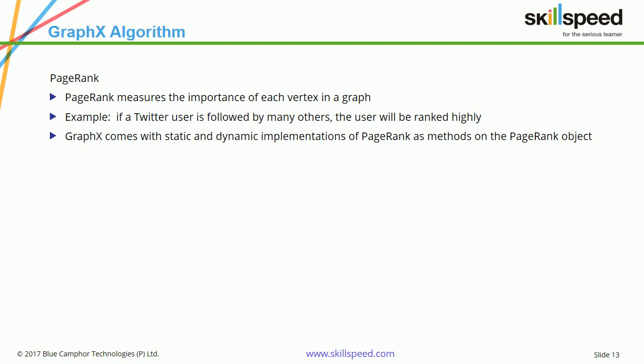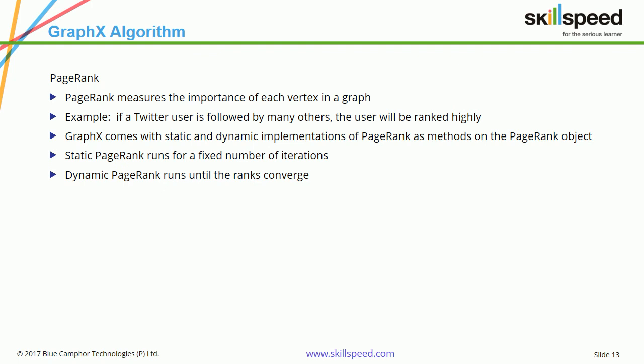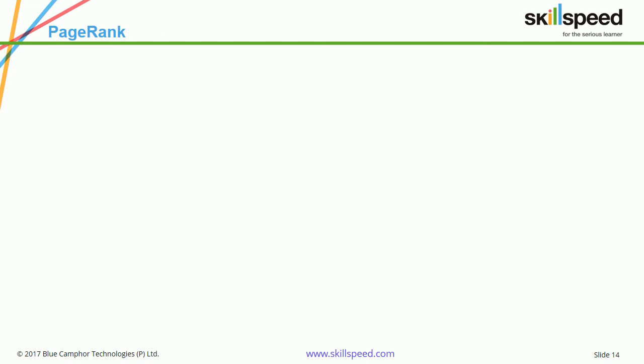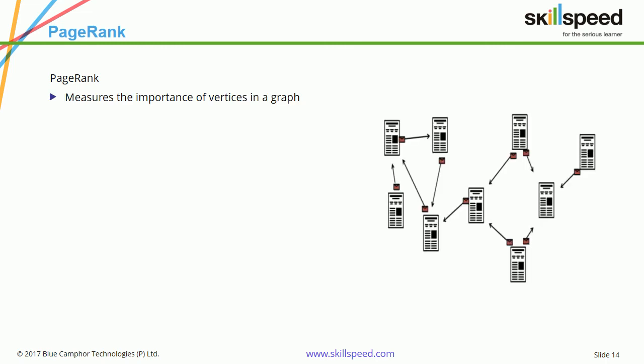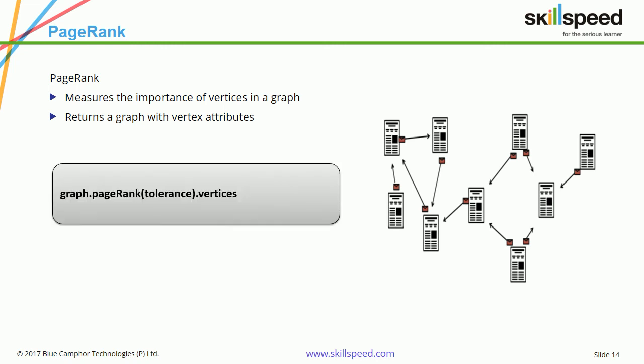GraphX can implement both static and dynamic page rank algorithms. The static page rank uses a fixed number of iterations, while the dynamic one iterates until the data converges. The page rank algorithm returns a graph with vertex attributes representing importance. To run it, all you need to do is call graph.pageRank, pass a tolerance value, and then call dot vertices.